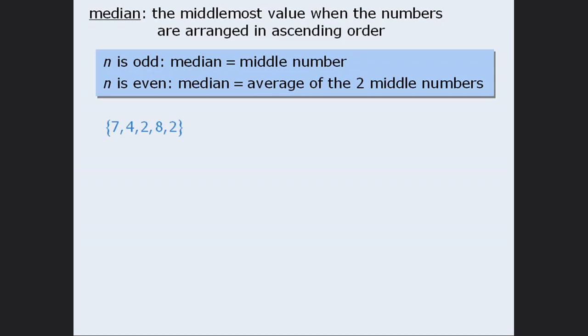To find the median of this set, we will first rearrange the terms in ascending order. This set has an odd number of values, so the median here will be the middle value, which is 4.